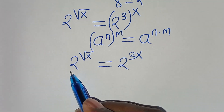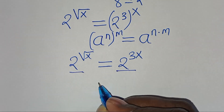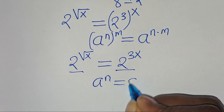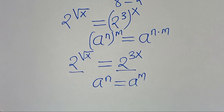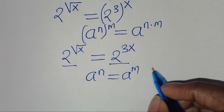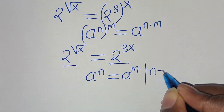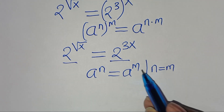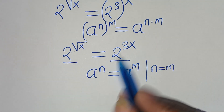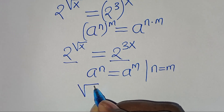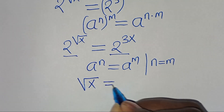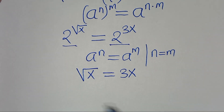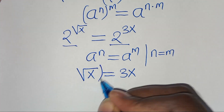Now since we have the same base on both sides — that is, a to the power of n equals a to the power of m implies that n equals m — applying this property, we have that the square root of x is equal to 3x.